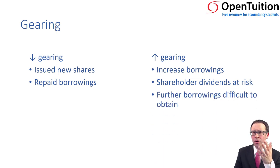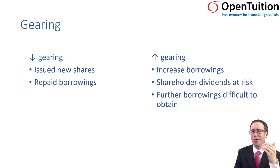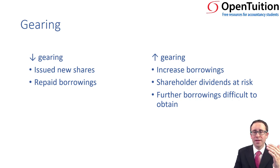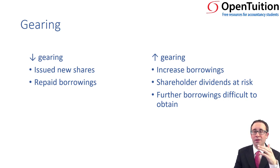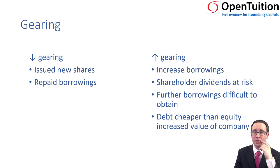If your gearing has gone up because you've borrowed more, it's not just more risk to the shareholders — it's more risk as well to the lender, and therefore they might not wish to grant you more borrowings. So gearing — debt over equity, or debt over capital employed — is based upon book values.